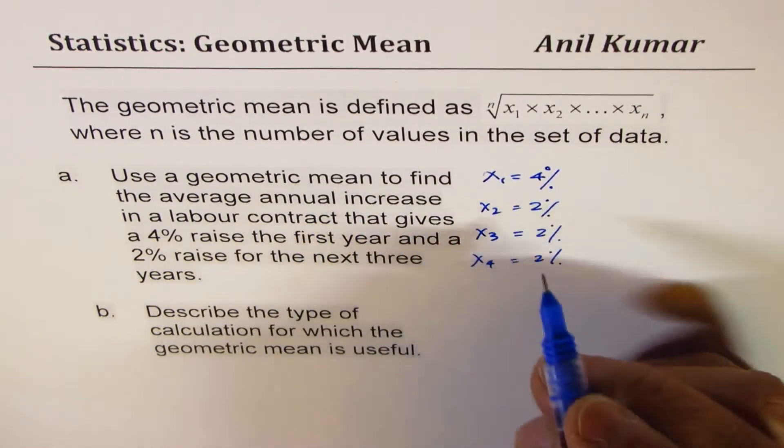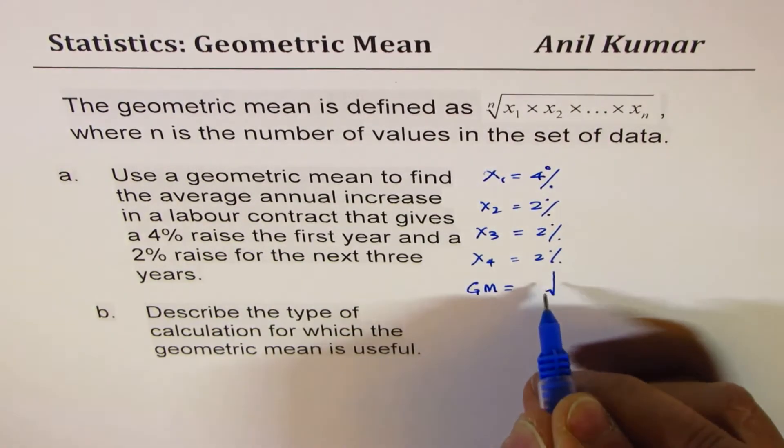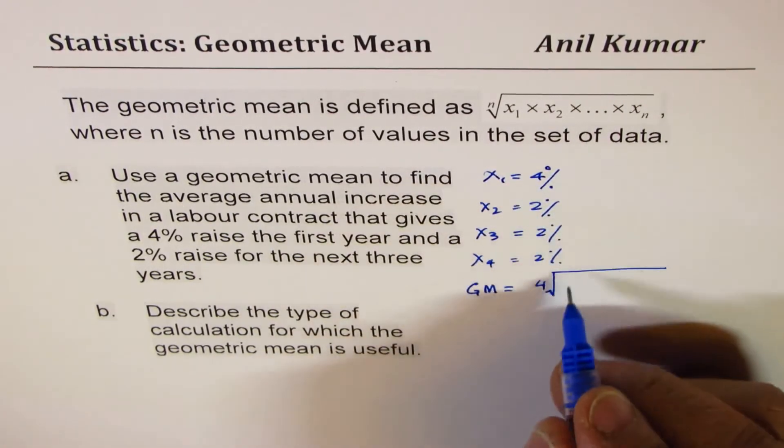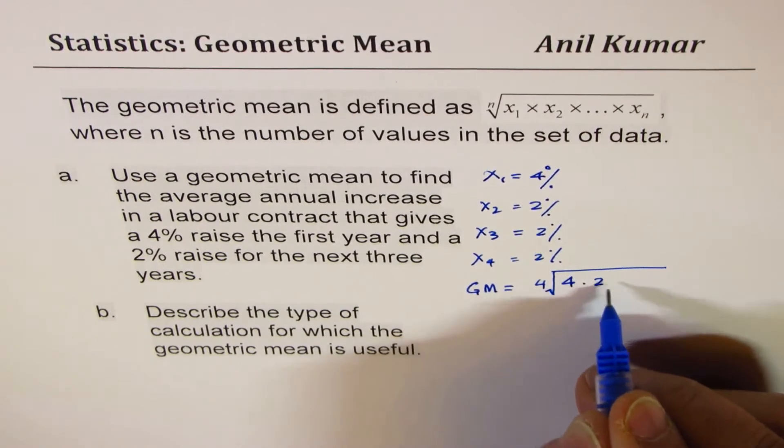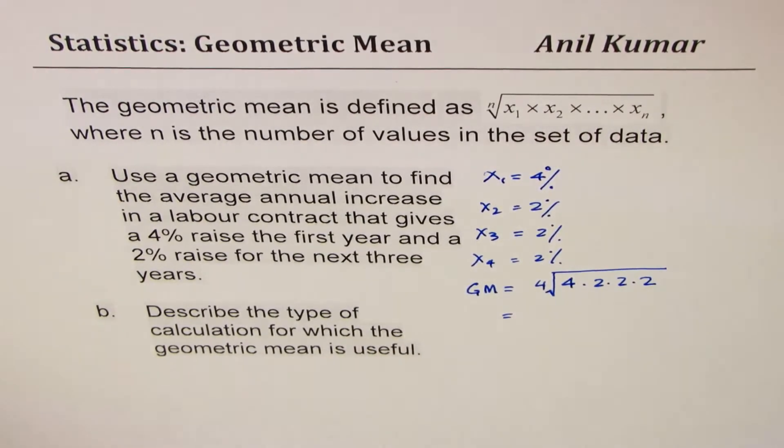So in this case, what is geometric mean? Let's say geometric mean will be equals to the 4th root of the product of these. So let me write this as 4 times 2 times 2 times 2. So we can use the calculator to calculate this answer.